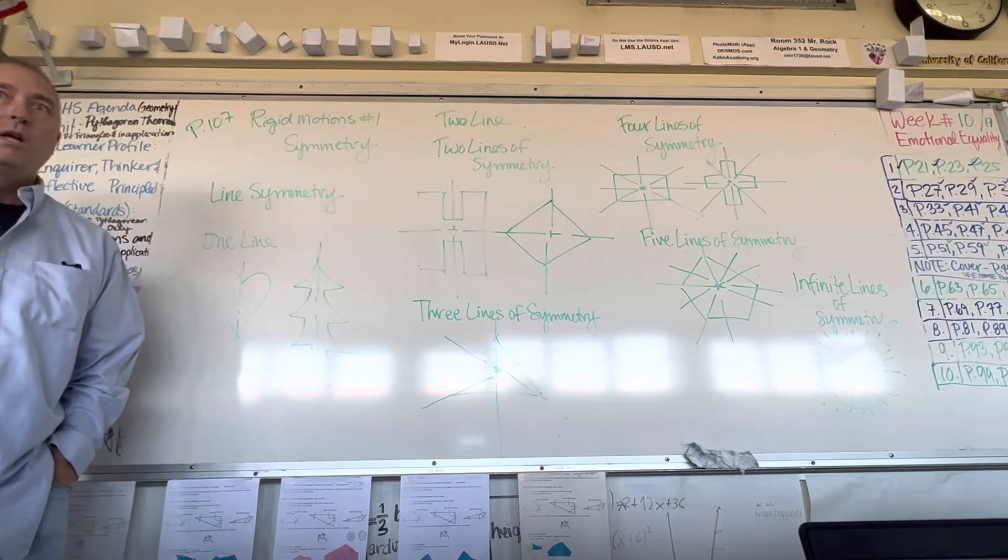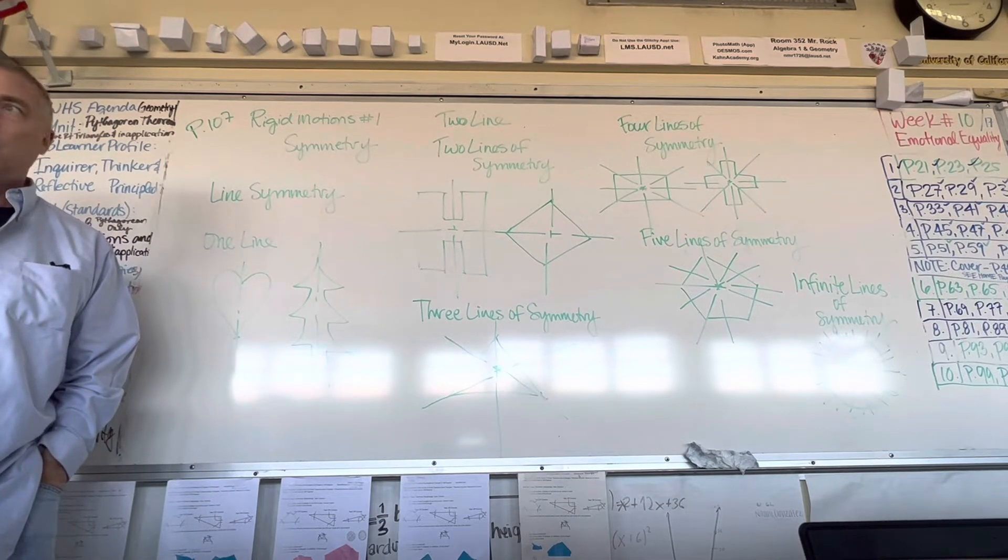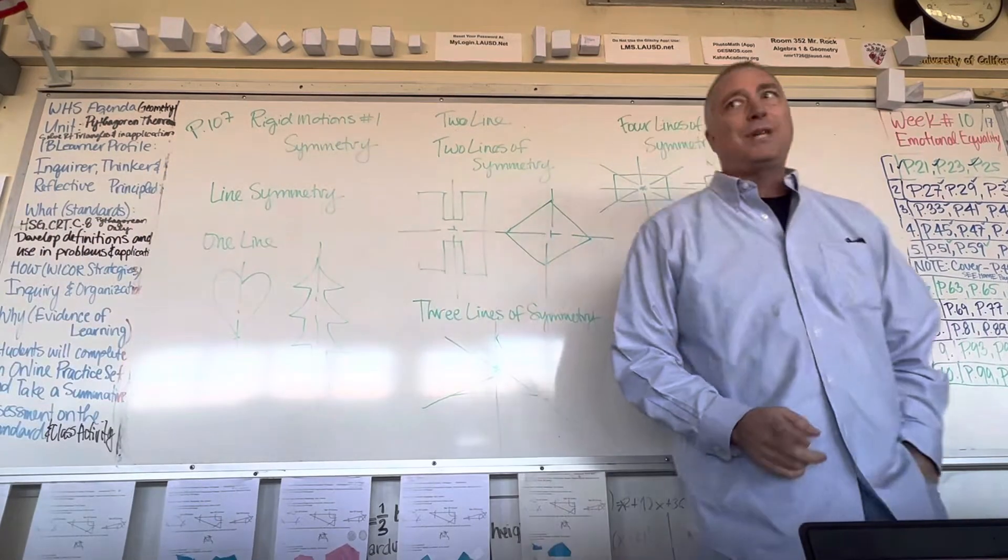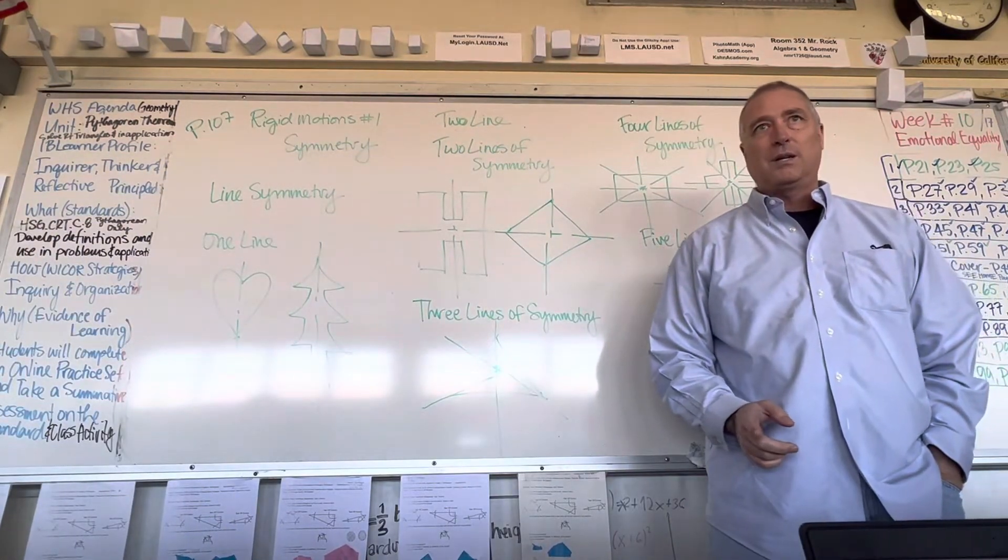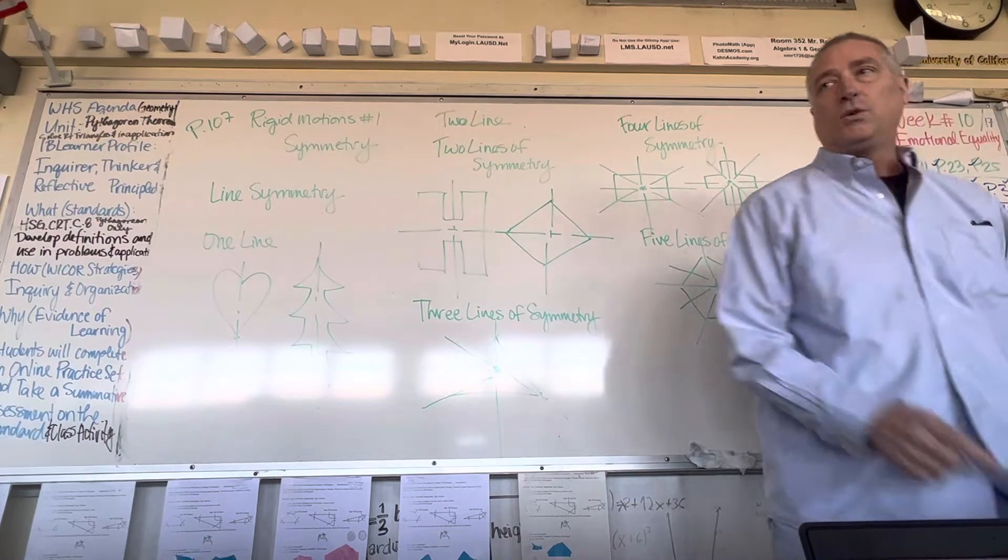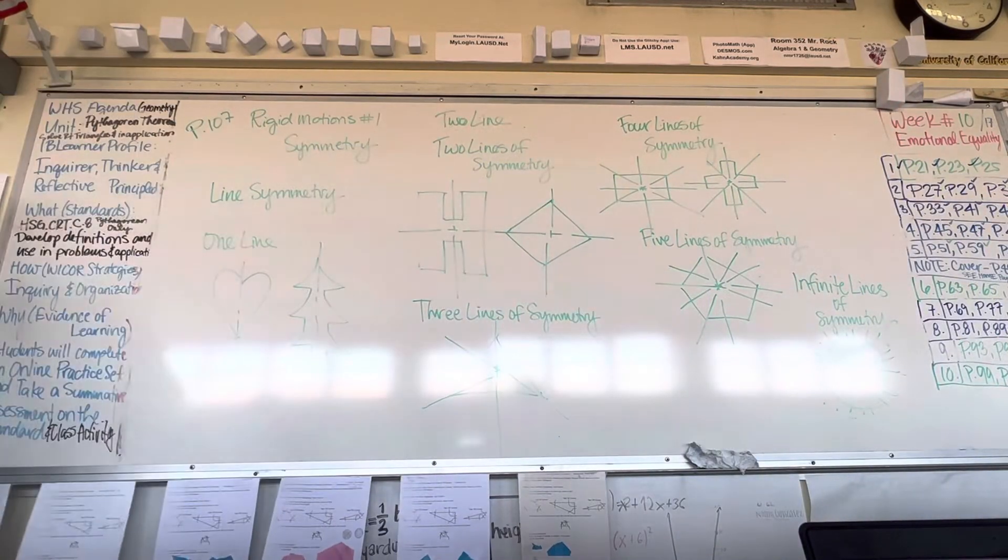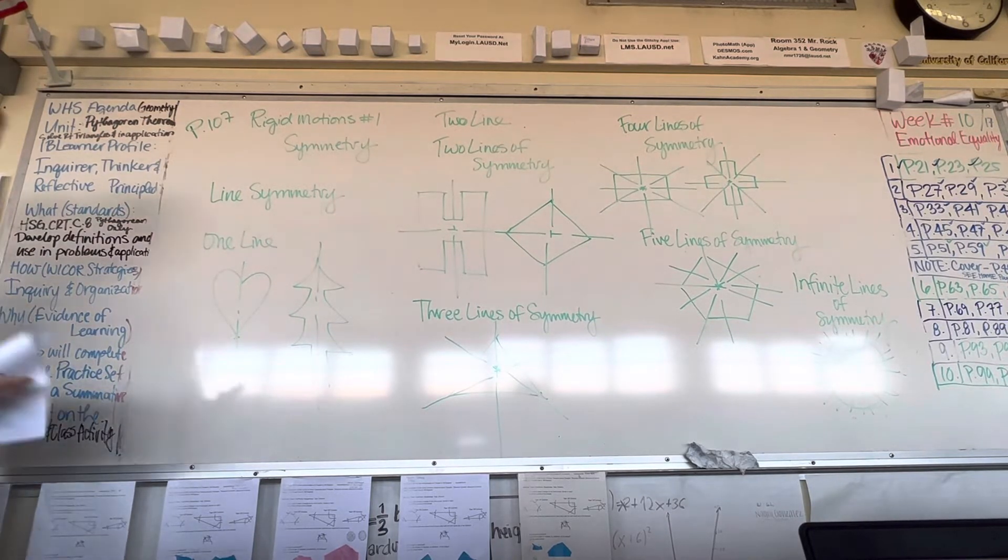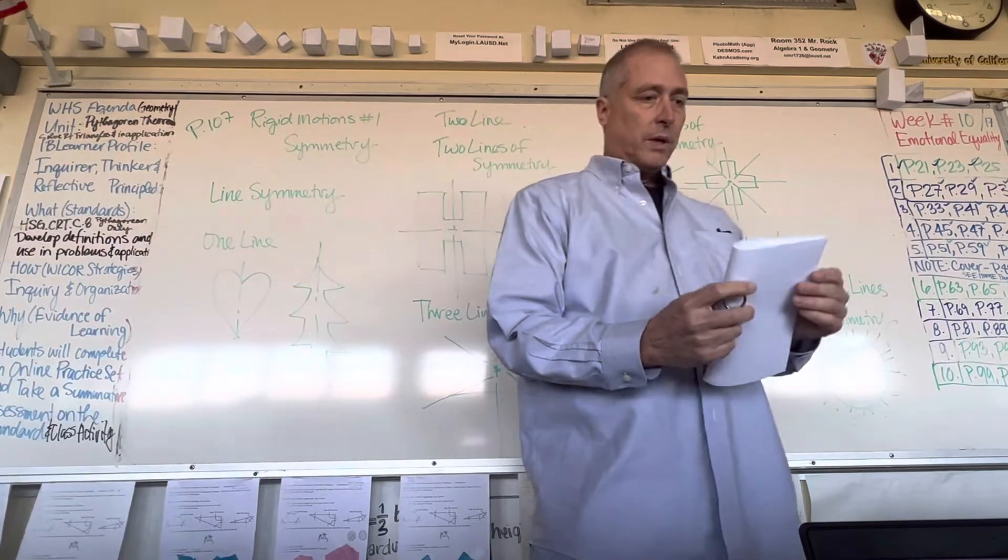Everybody say symmetry. What does it mean to you in your mind? Both sides are the same. Both sides are the same. How can you test symmetry? By measuring? You can test by measuring. What's another way? I know once I do this, you're going to want to do it too. Are you watching? What am I doing?